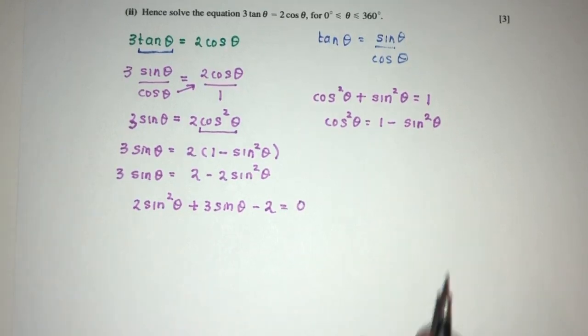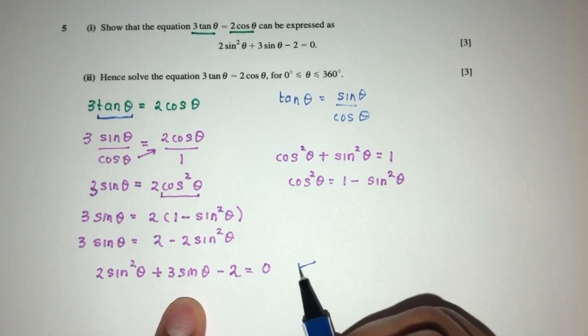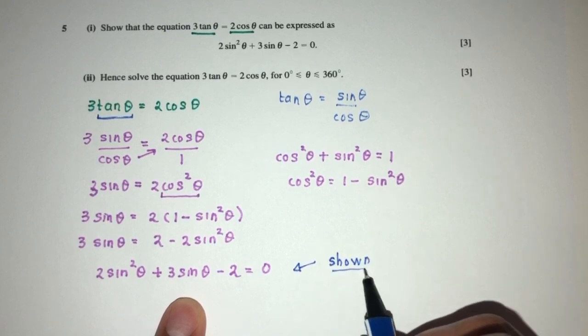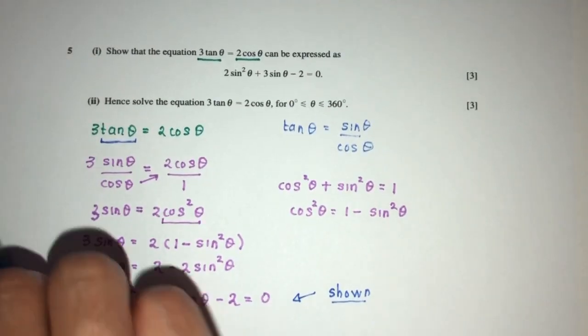You will have 2sin²(θ) + 3sin(θ) - 2 = 0. So now this is exactly what we are trying to find. And this is shown as required. That is part 1 of the question solved for you. Shown as we need to show.